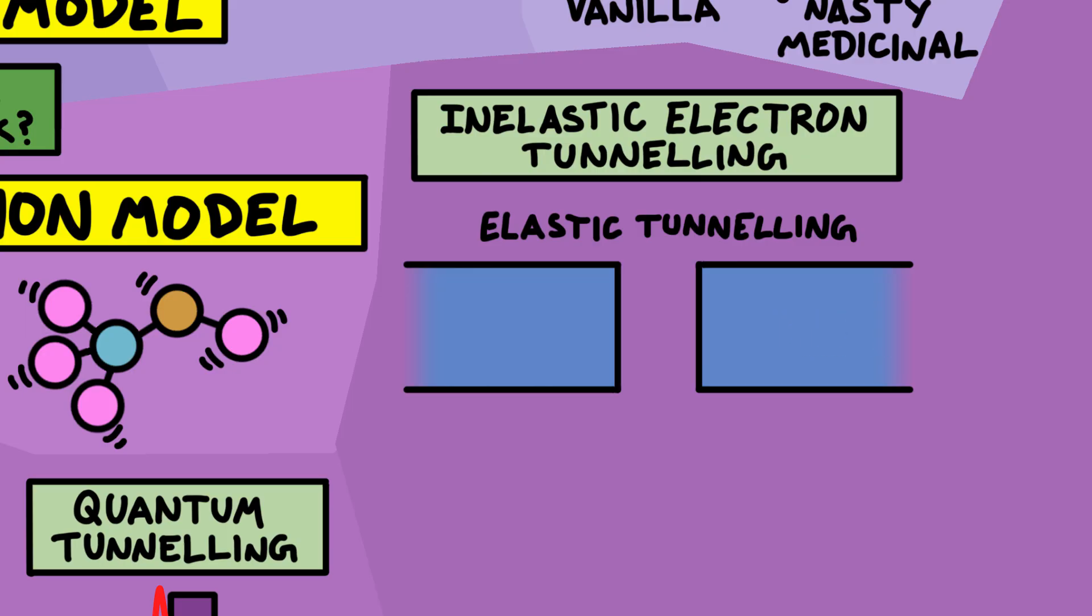But there's an additional condition. An electron in a metal is a certain energy, and it can only tunnel to the other side if there's an empty hole which has got the same energy. But if the hole on the other side is at a lower energy, the electron can't tunnel because there's nowhere for the spare energy to go.